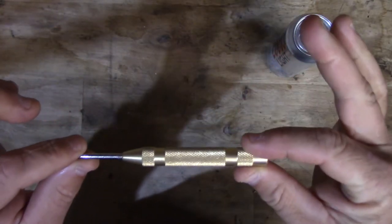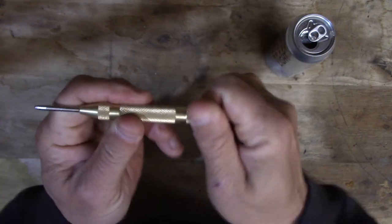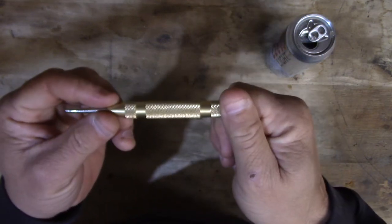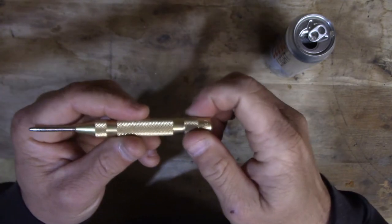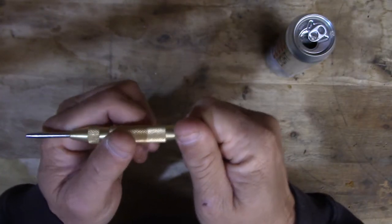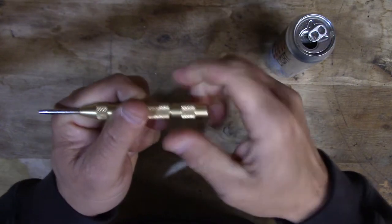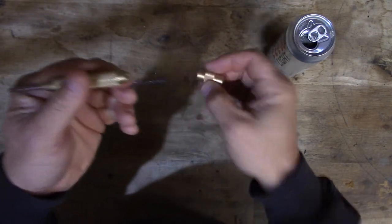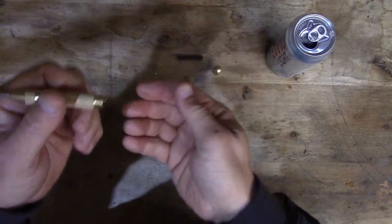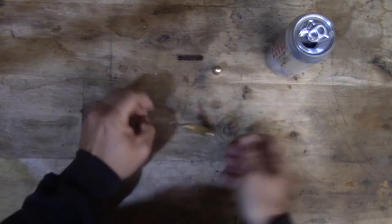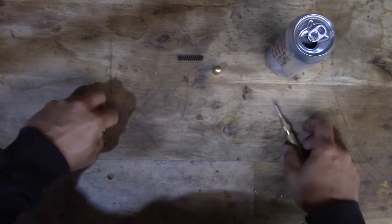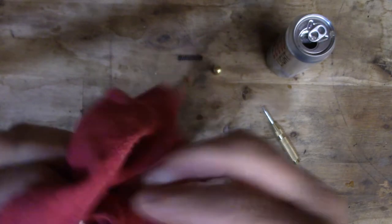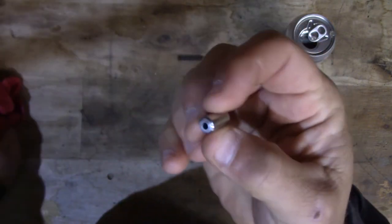Alright, first thing we're going to do is take this apart. It comes apart in three pieces, and it's lefty tighty. First thing we'll do is take off this end cap. There's a spring in here and a little plunger that looks like this - it's round on this end and it's got a hole in this end.